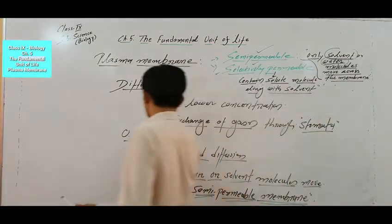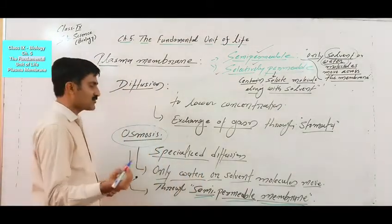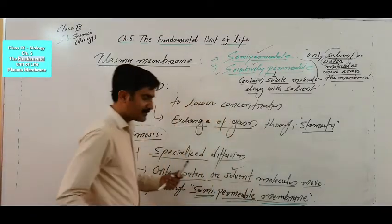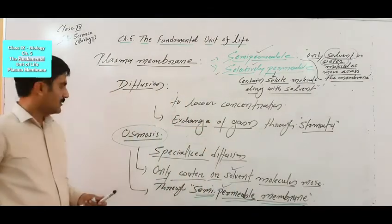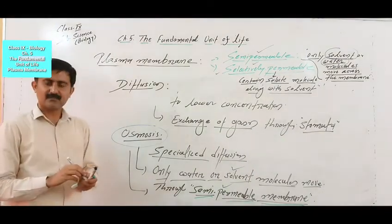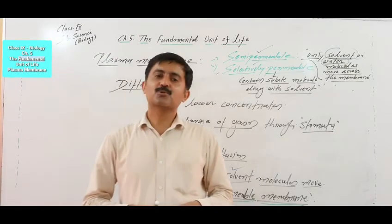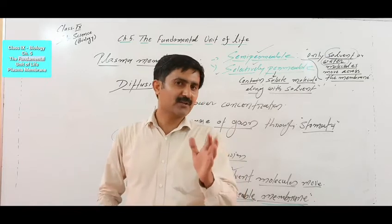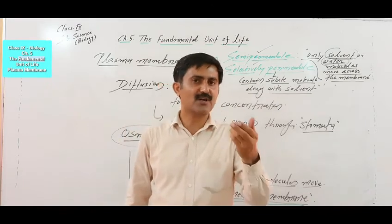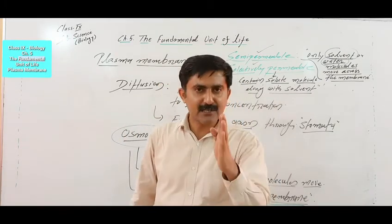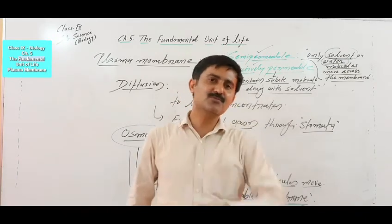In case of osmosis, two conditions are essential: first, only solvent moves; and second, there must be a semi-permeable membrane present. Osmosis can be defined as the movement of solvent molecules from higher to lower concentration through a semi-permeable membrane. Comparing this to the definition of diffusion, we add two key words: solvent and semi-permeable membrane. Without these two words, the definition would simply be that of diffusion.